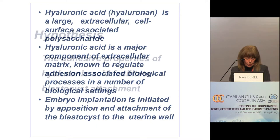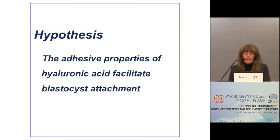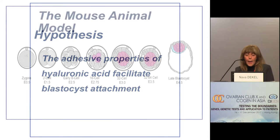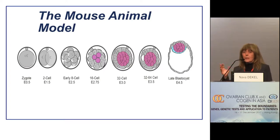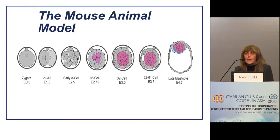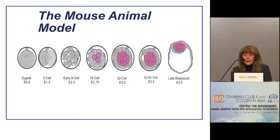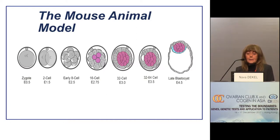As embryo implantation is initiated by apposition and attachment of the blastocyst to the uterine wall, we hypothesized that the adhesive properties of hyaluronic acid may facilitate blastocyst attachment. These studies were conducted using a mouse animal model. In the mouse, the day of zygote formation is defined as embryonic day 0.5, and during the next three days successive cell divisions result in the formation of the early blastocyst.